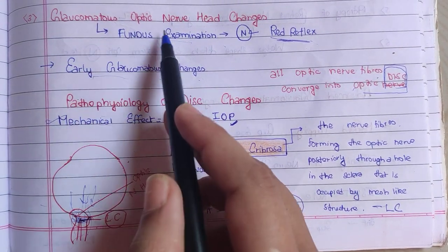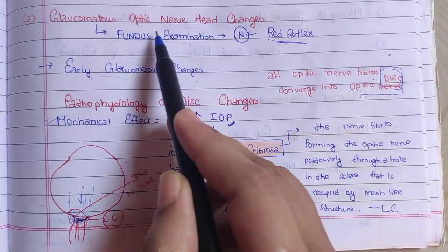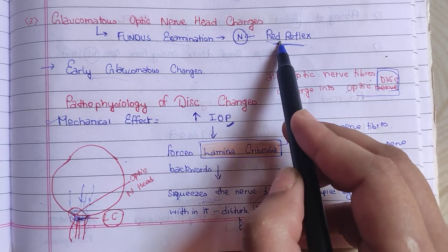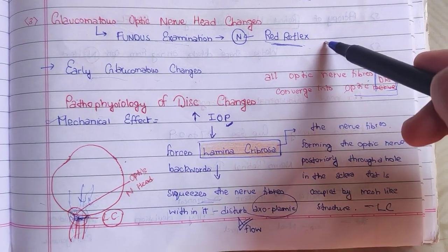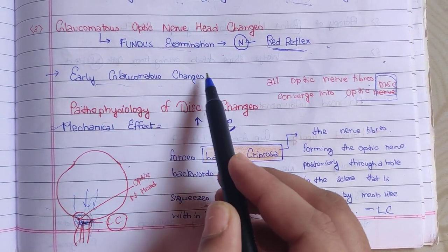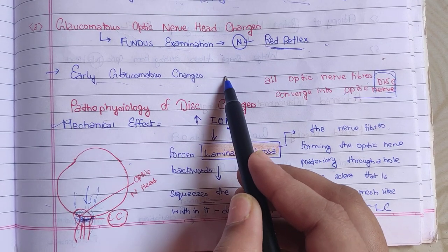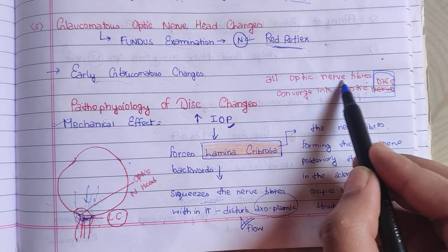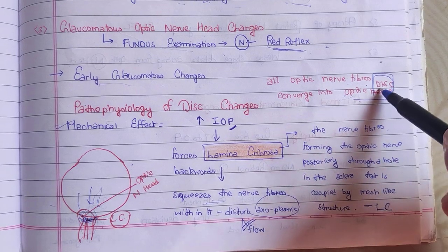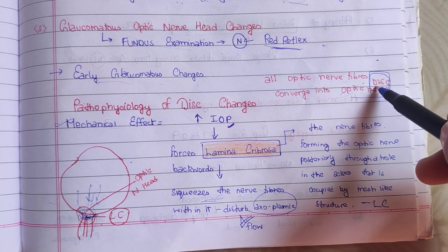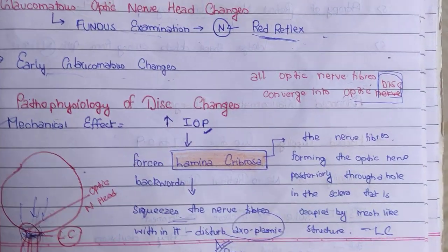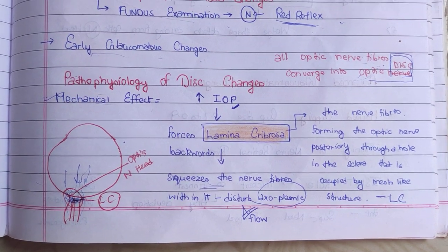Let us talk about glaucomatous optic nerve head changes seen on fundus examination — normally we see the red reflex. For early glaucomatous changes, note that all nerve fibers converge at the disc. Let us first look at the pathophysiology of disc changes: there are mechanical and vascular effects.